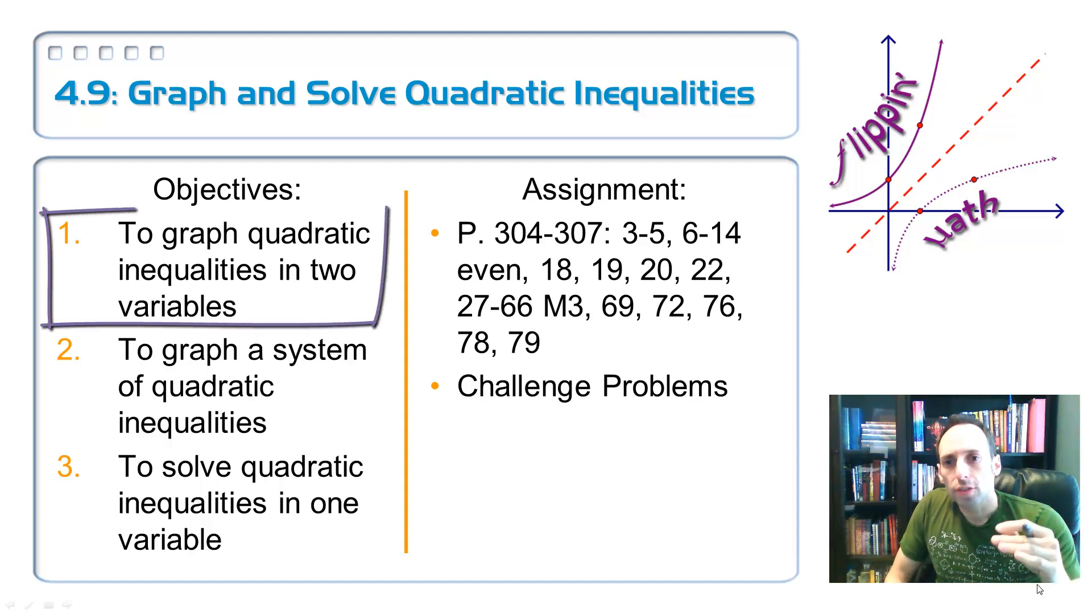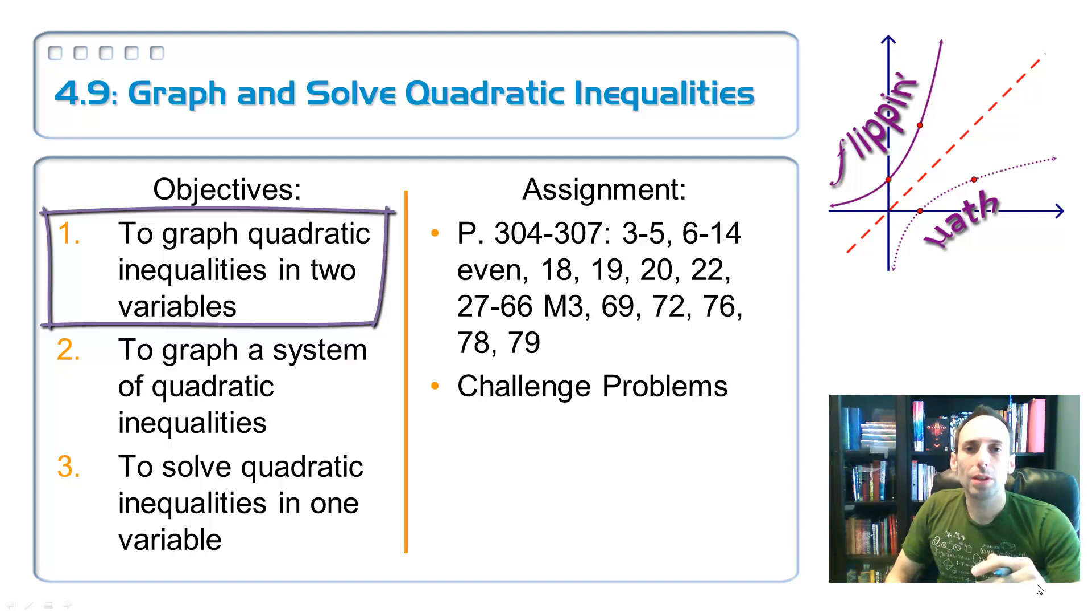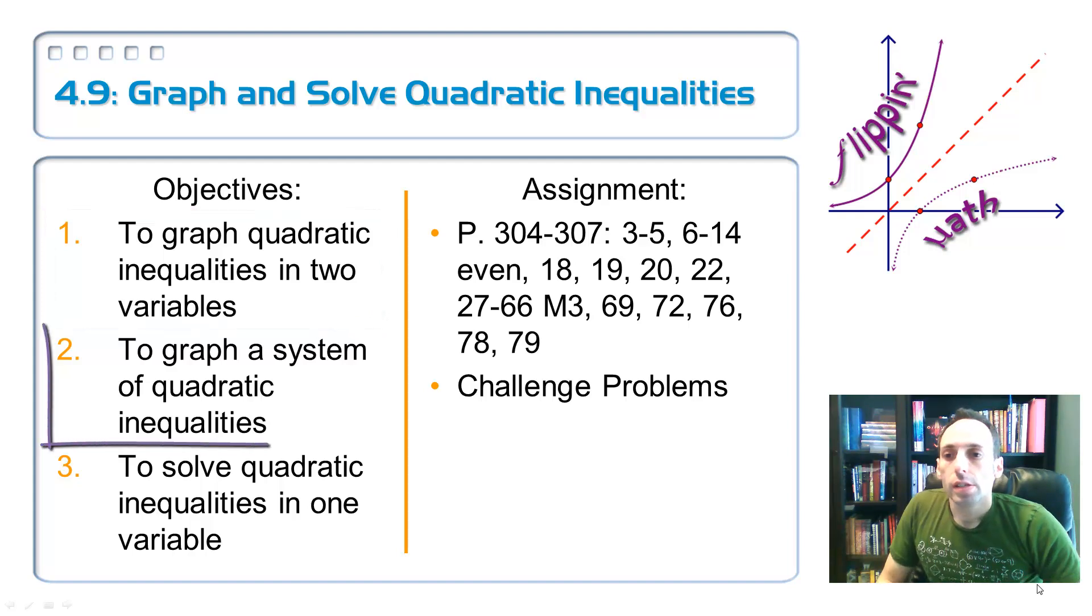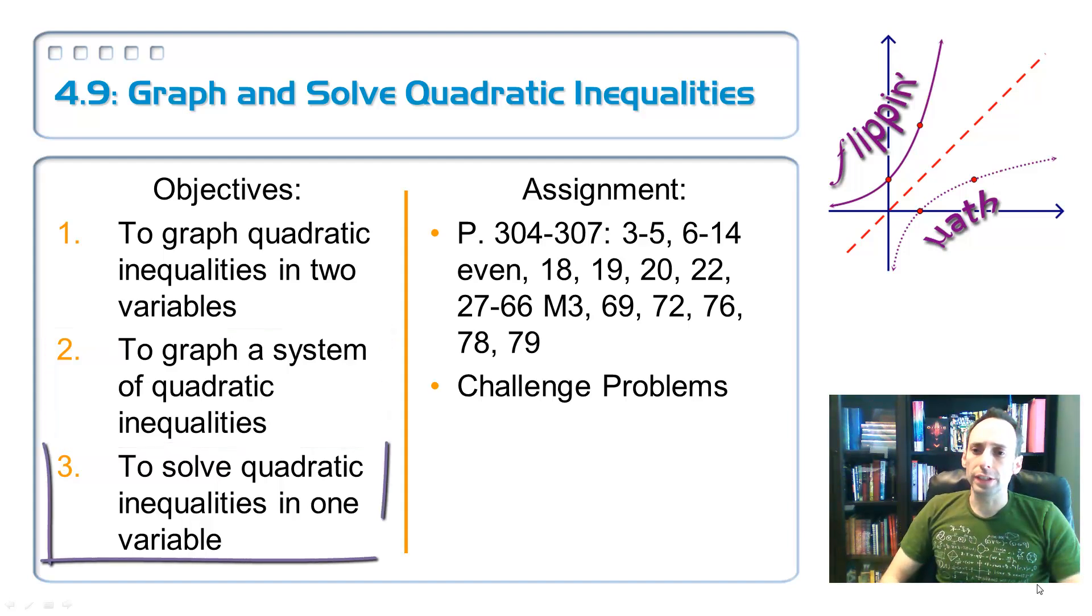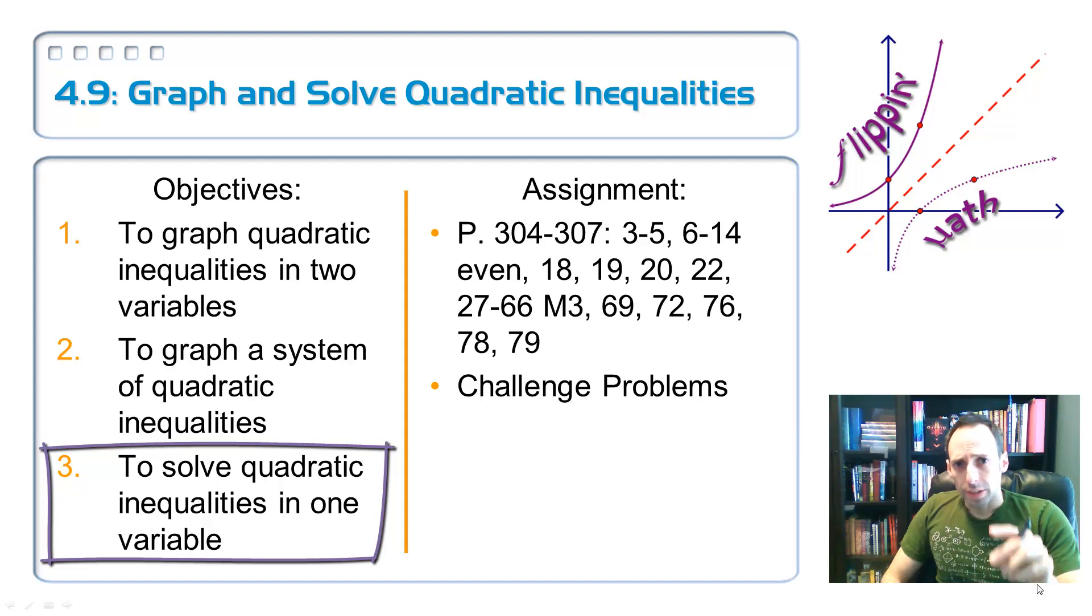We're going to graph some quadratic inequalities in two variables. This is with a y coordinate and an x coordinate. So, instead of it being y equals ax squared plus bx plus c, it's y is greater than ax squared plus bx plus c. Number two, how about we graph a couple of these things together, a system of quadratic inequalities, and see where they overlap with some colors. And then, finally, this one's the toughest one. It doesn't seem like it, but it is. Solve quadratic inequalities in one variable. And you might think, well, one variable, that should be easier than two variables. But, well, you'll see.